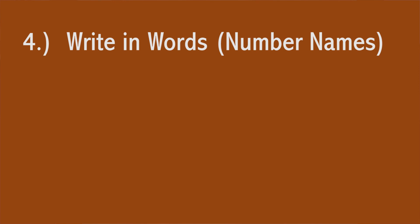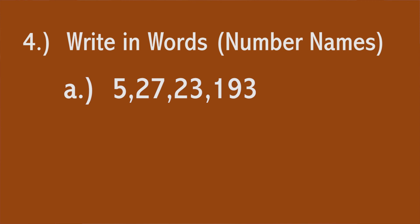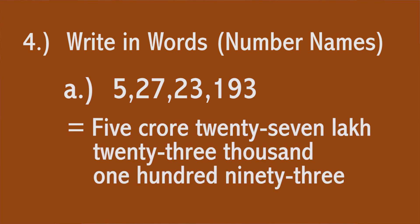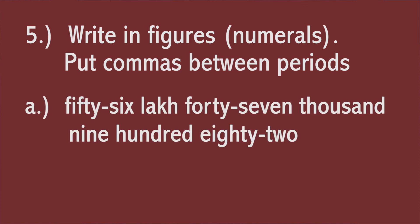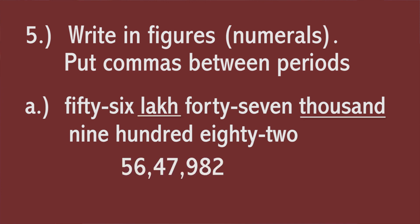Then the fourth section: write in words, that means number names. First problem: 5,27,23,193. Based on the Indian place value chart, the number name is 5 crore, 27 lakh, 23,193. Next section: write in figures or numerals and put commas between periods. First problem: 56 lakh, 47 thousand, 982. Avoiding the periods, the number is written as 56,47,982.